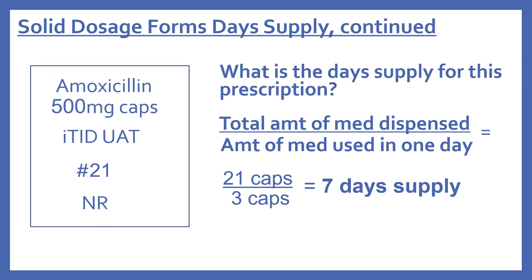Another example of solid dosage form day supply: amoxicillin 500 milligram capsules, 1 TID UAT — one three times a day until all are taken — number 21 to be dispensed, no refills. We have the quantity and need to calculate the day supply. The total is 21 capsules; one TID means three capsules in a day. So 21 divided by 3 gives us a seven-day supply.